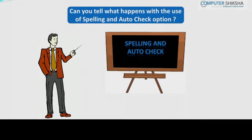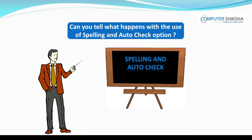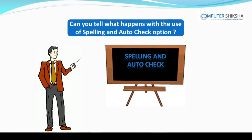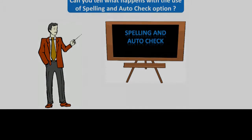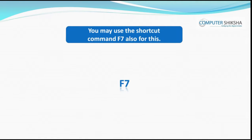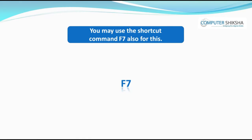Can you tell what happens with the use of the spelling and auto check option? If you have made a mistake in typing any words in your document, then to correct the same, you will use the spelling and auto check option. You may also use the shortcut command F7 for this.